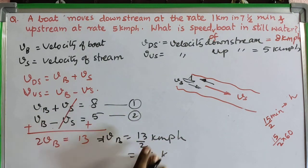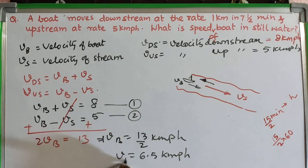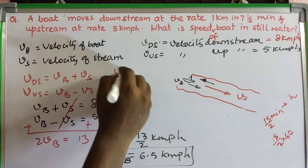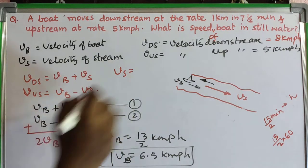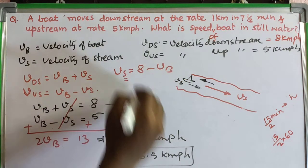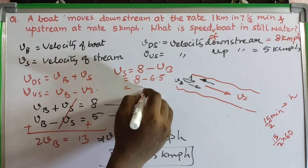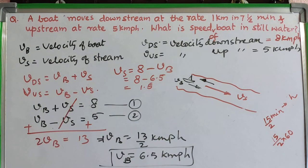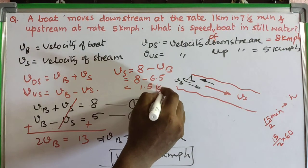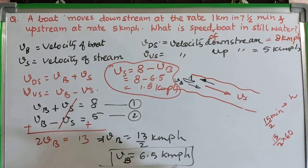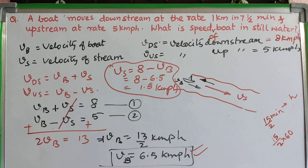So VB equals 6.5 km per hour — that is the speed of the boat in still water, which is what we were asked. If you also want the velocity of the stream, from equation 1: Vs equals 8 minus 6.5 equals 1.5 km per hour. But the answer to the question is 6.5 km per hour. I hope the solution is clear for you.